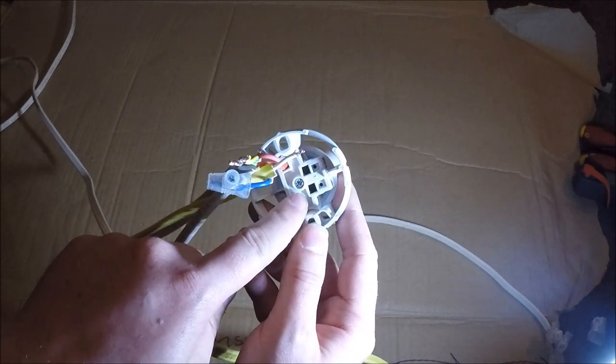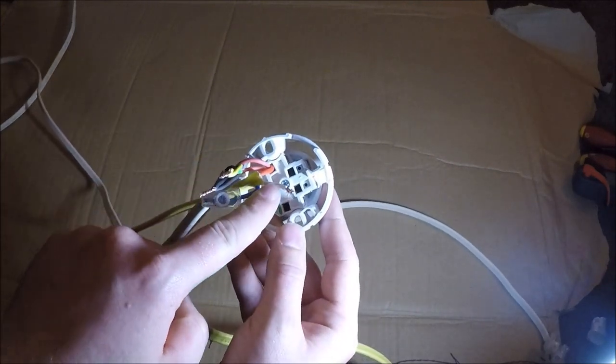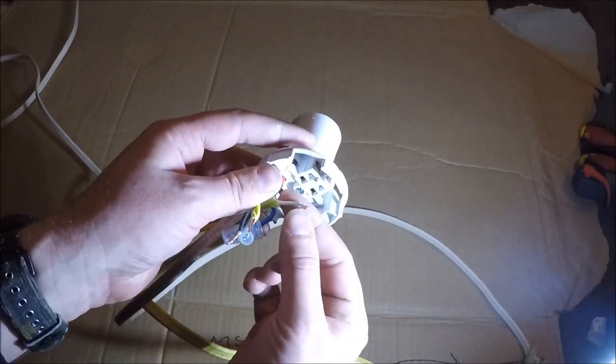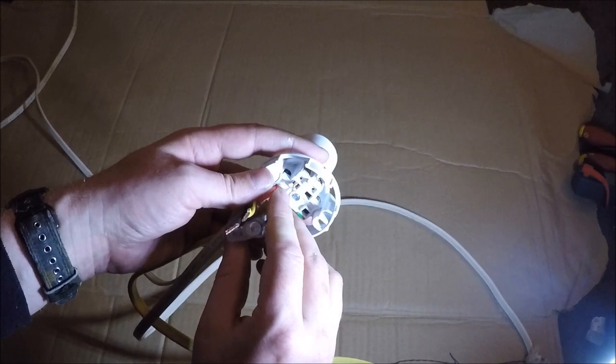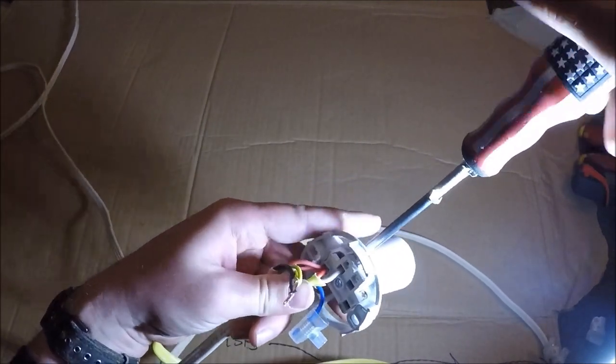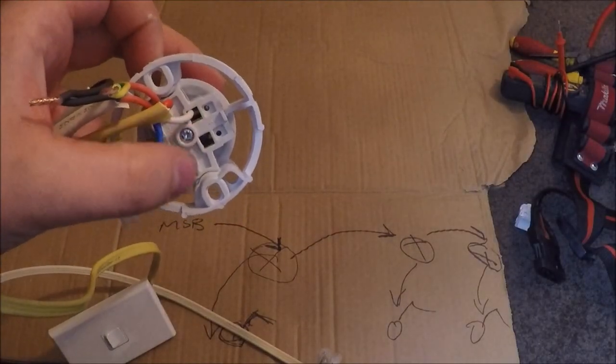These two here are for your switch wire and your neutral. So in this instance, the one coming out of the number one on the back of the light switch is our switch wire, and that is our white one. We'll put that into one of those terminals and screw it in there. So we've put that white into that terminal there.